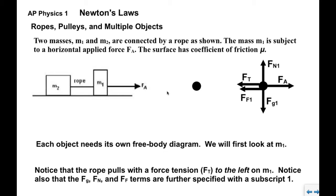The key thing here is that the rope can only pull, so the rope is going to pull to the left on M1. Note also that these Fn, Fg, Ff get subscripted Fn1, Fg1, Ff1 so that we know which object we're talking about.